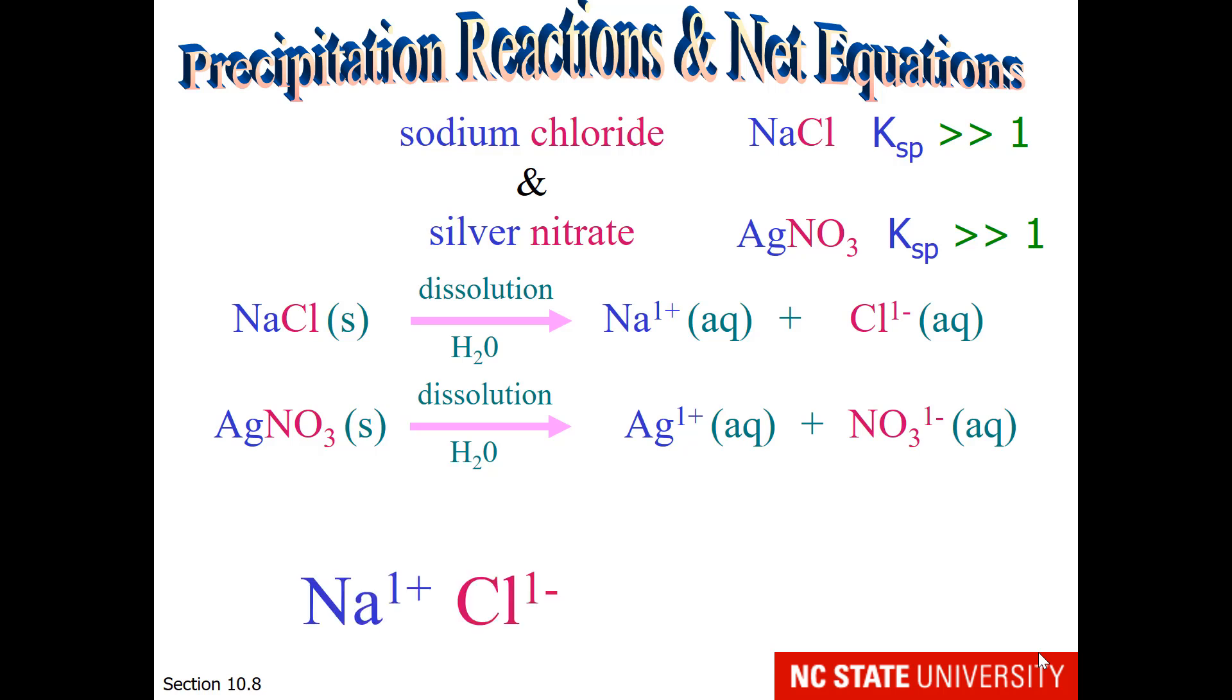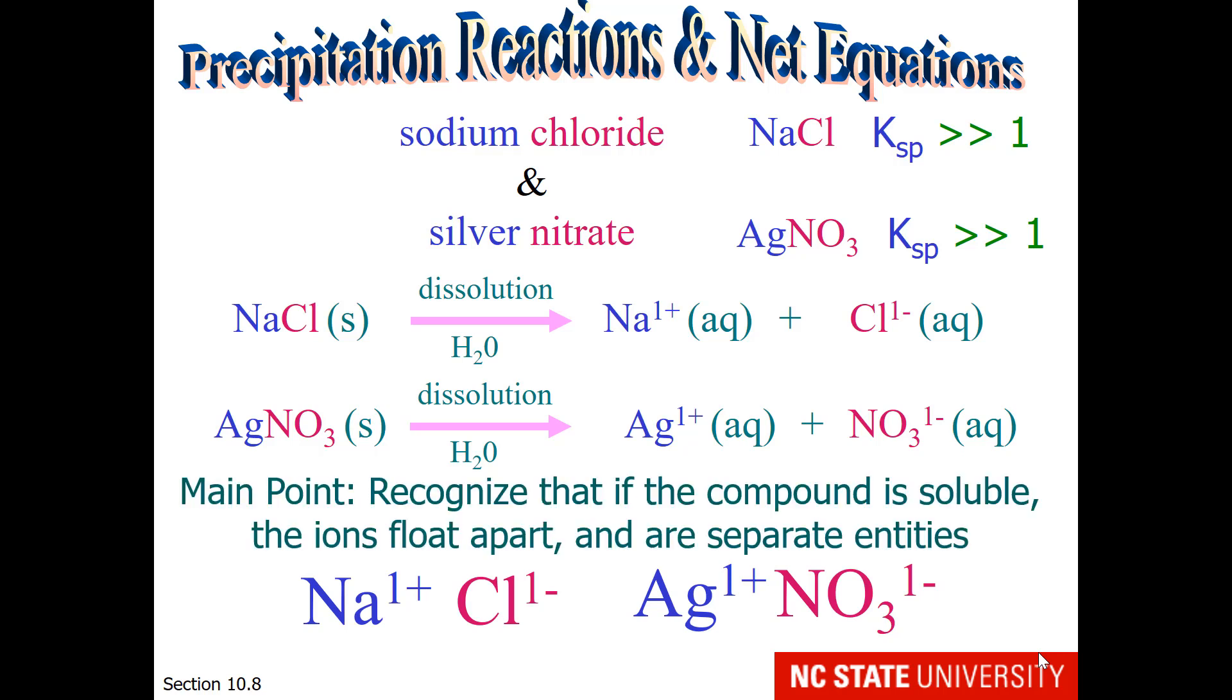If we mixed these two solutions, we would have sodium chloride and silver nitrate all floating about in the same solution. So our main point here is to recognize that if compounds are soluble, the ions float apart and act as separate entities in solution.